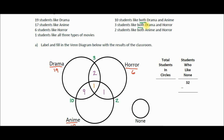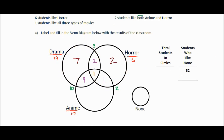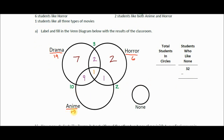The next step is to figure out how many students are left in each circle — the ones not yet counted. Nineteen people liked drama; nine, ten, eleven, twelve of those have already been counted because they like other things as well. So nineteen minus twelve leaves seven in that circle. Six people like horror; two, three, four have already been counted, so two are left. For anime, seventeen liked it; nine, ten, eleven were already accounted for, so seventeen minus eleven is six left in that circle.